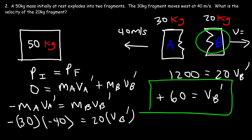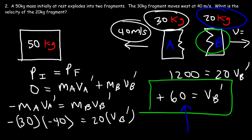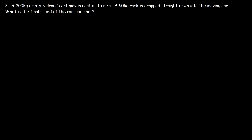Fragment B has less mass than fragment A, and therefore fragment B has a greater speed. Fragment A has more mass, so its speed is less — 40 meters per second as opposed to 60 meters per second.